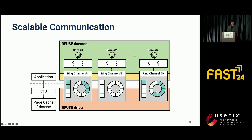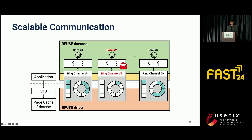This arrangement ensures that worker threads do not incur inter-NUMA memory access during request submission and completion, and also prevents lock contention among worker threads operating on different ring channels. When the RFuse driver sends a request to the RFuse daemon, it selects the appropriate ring channel based on the core ID where the current thread is scheduled. For example, an application thread scheduled on core 2 will submit its request via ring channel 2, and the worker thread dedicated to ring channel 2 is scheduled on core 2. Since ring channels are mapped into the daemon's VMA, worker threads don't need to call system calls to retrieve requests from the kernel driver, and because no data structures are shared with other cores, requests can be executed in parallel.